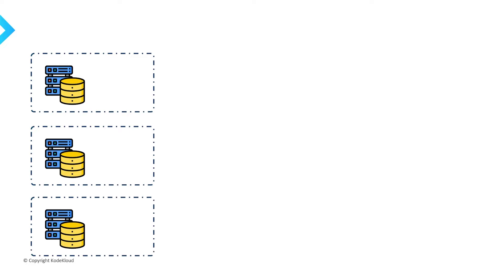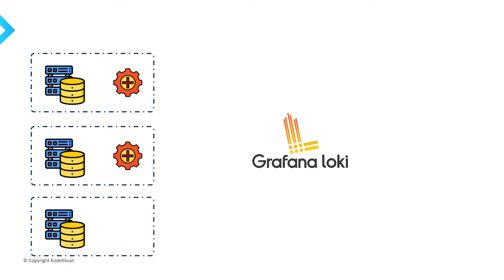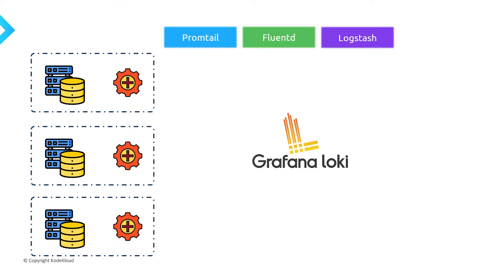Now let's take a look at the architecture of Loki and see how all of these pieces fit together and how we actually get our logs to our Loki server. We're going to have a couple of servers or applications that we want to collect logs from. To actually get logs from the server to your Loki instance, you're going to need to install a client on your servers. Loki actually works with several different clients or agents — they've created one specifically for Loki called Promtail, but you can also use other pre-existing solutions like FluentD or Logstash. Once you get your agent installed, the agents are going to grab the logs from the server and then stream those logs to your Loki instance.